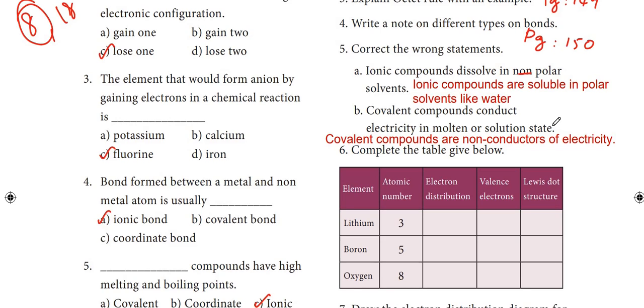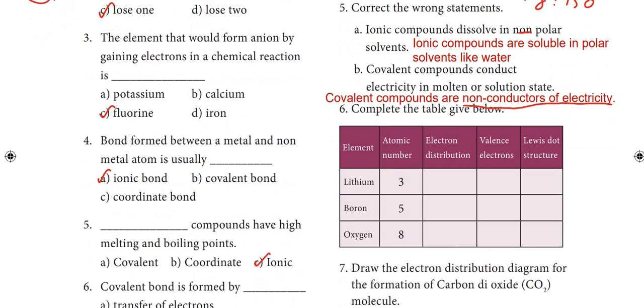Next: covalent compounds conduct electricity in molten or solution state — this is false. Covalent compounds are non-conductors of electricity.